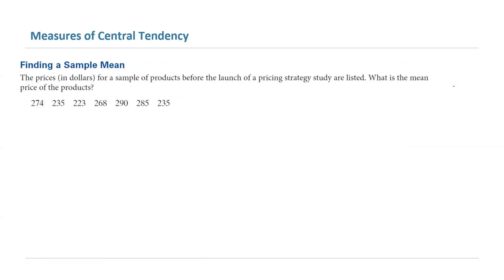In this example, the prices in dollars for a sample of products before the launch of a pricing strategy study are listed below. What is the mean of the data? The values include 274, 235, 223, 268, and so on. Remember the formula.